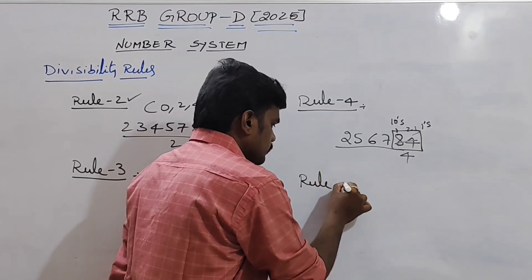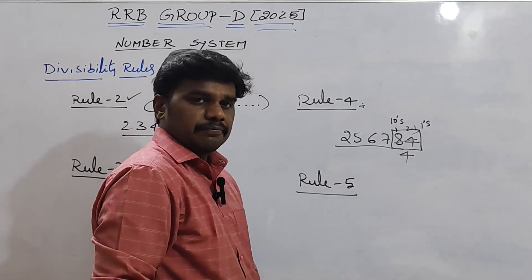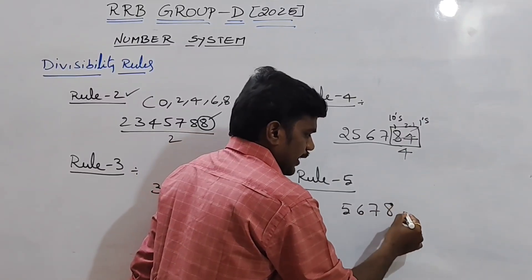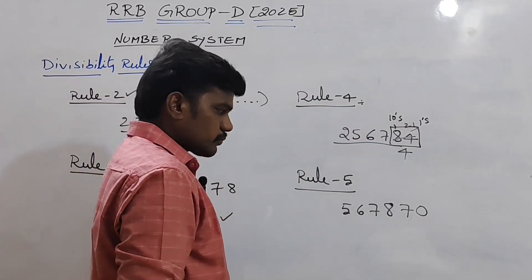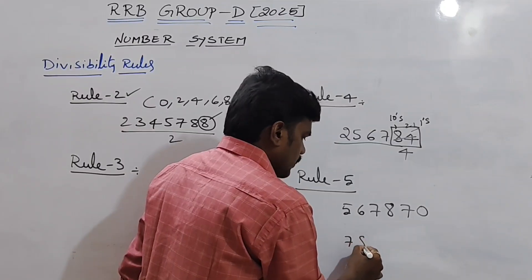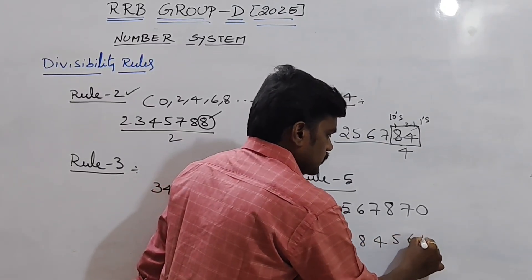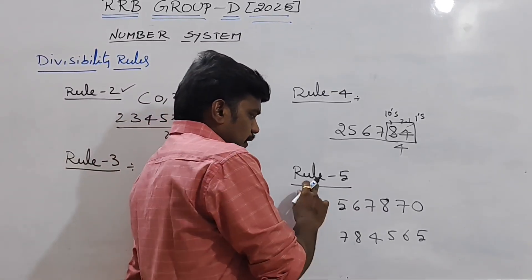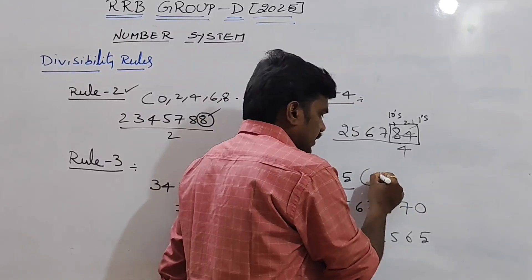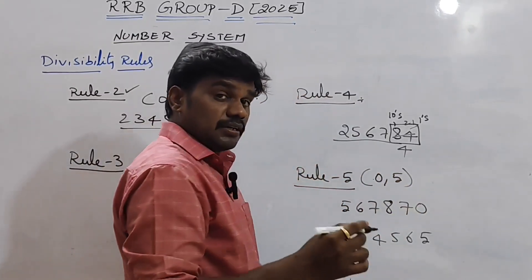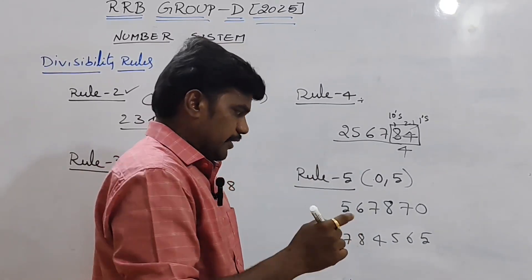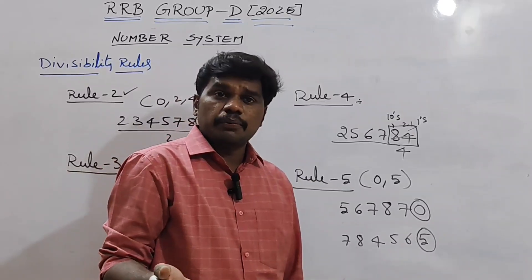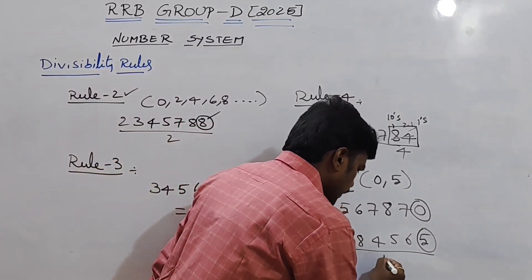Rule number 5: Take numbers like 567,870 and 784,565. Rule 5 says the number is divisible by 5 whenever the last digit is either 0 or 5. In both cases, the first ends in 0 and the second ends in 5, so both numbers are divisible by 5.